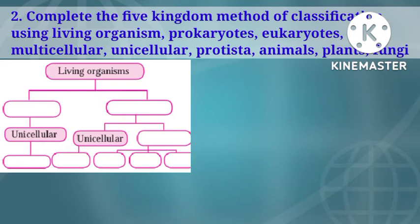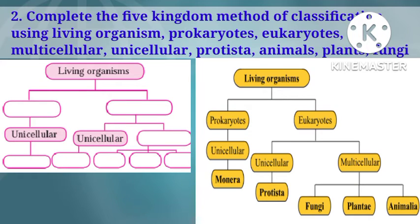Next question: complete the five-kingdom method of classification using the terms — living organisms, prokaryotes, eukaryotes, multicellular, unicellular, Protista, animals, plants, fungi. Living organisms are classified into two categories: prokaryotes and eukaryotes. Prokaryotes are unicellular, forming the first kingdom, Monera.